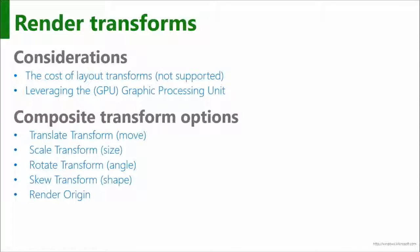For all of those transforms, we can move the origin around to make sure that the render takes place where we want — so it may be centered and you rotate on the center, or you may want to rotate on a corner. You can always change that based on the render origin. We've had render transforms all the way back to WPF.